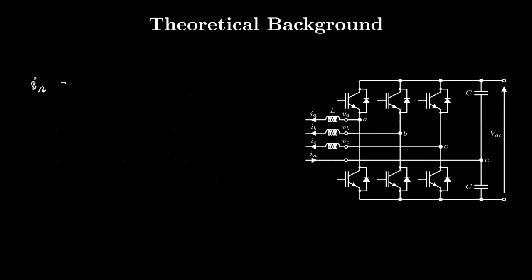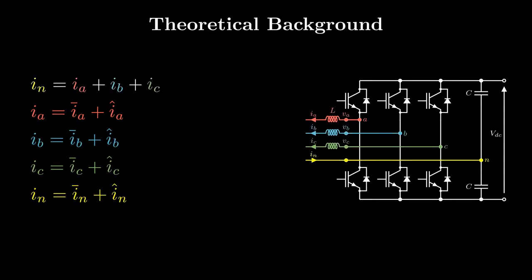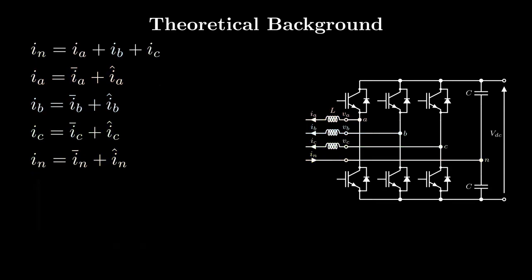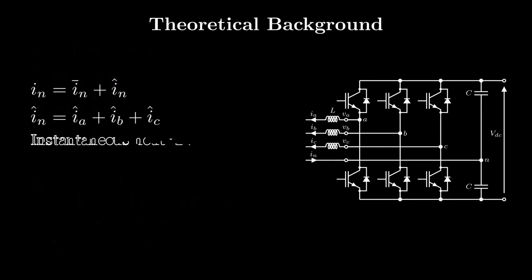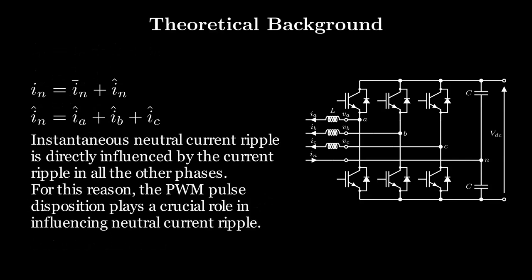The neutral current is given by the sum of phase currents, and any of these currents can be split into two parts. The first one is the AC component, having sinusoidal waveform. The second one is the switching current ripple caused by PWM high-frequency component. Therefore, neutral current ripple can be seen as the instance-by-instance summation of each phase current ripple.